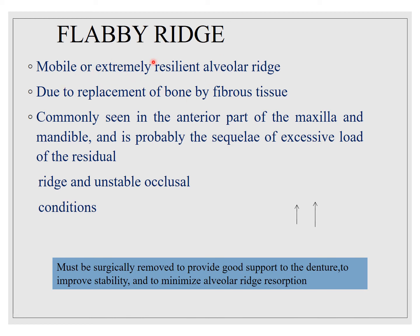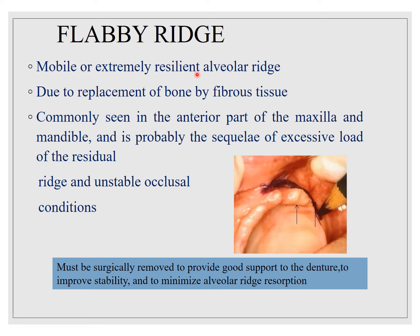Coming to the flabby ridge — any mobile or extremely resilient alveolar ridge is known as a flabby ridge. It is mostly seen in the maxillary anterior or mandibular edentulous anterior region, due to replacement of bone by fibrous tissue. It is probably a sequel of excessive load on the residual ridge and unstable occlusal conditions. It must be surgically removed to provide good denture support, improve stability, and minimize alveolar ridge resorption, though there are also non-surgical techniques to deal with it.